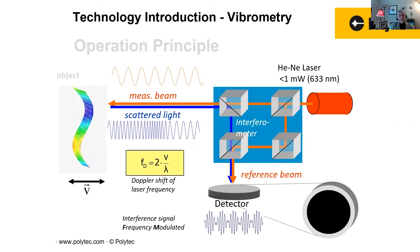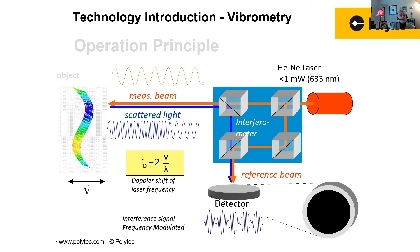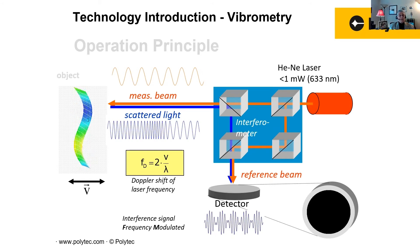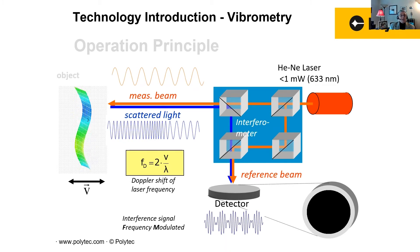This slide shows a summary of the principle of operation of our laser Doppler technology, presenting a basic interferometric diagram. We essentially measure the velocity and displacement of a vibrating surface. For more details, you may reach me and I could give you more information, but for the purpose of this presentation, this is enough.